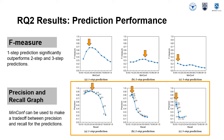The precision averages for d-step predictions constantly increase and achieve maximum values at the beginning, then drop sharply as recall averages increase. The recall averages increase as min-conf values increase. Overall, 1-step prediction significantly outperforms 2-step and 3-step predictions. Min-conf can be used to make a trade-off between precision and recall for the prediction.